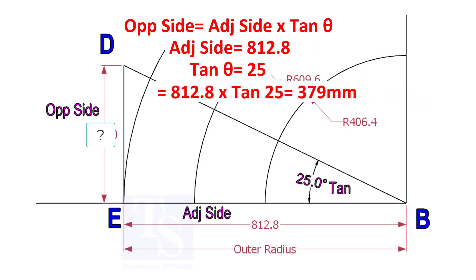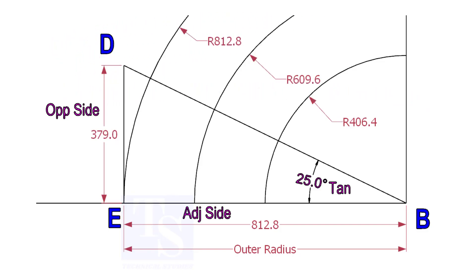812.8 into tan 25 equals 379 millimeters. Draw the line ED vertically and the slant line DB. I hope now you will be able to draw a line in any degree.